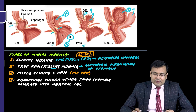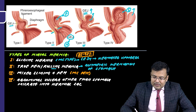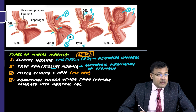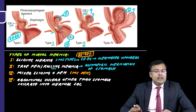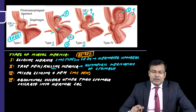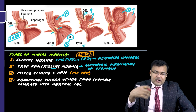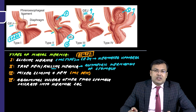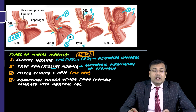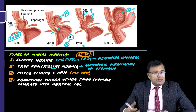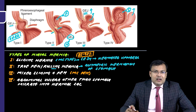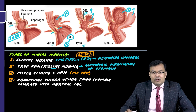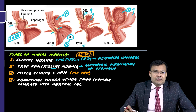The symptoms are easy to understand. In Type 1, patients will be either asymptomatic or have symptoms of reflux — that is, symptoms of GERD. In Types 2, 3, and 4, since there is herniation of the fundus and in Type 4 other bowel is also herniated, there is obstruction, causing pain. There may also be strangulation, leading to possible perforation. So Types 2, 3, and 4 mainly present with compression symptoms or symptoms of obstruction.